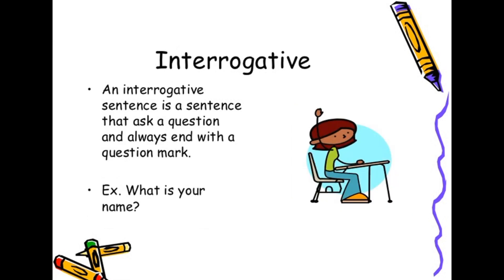Third is interrogative. An interrogative sentence is a sentence that asks a question and always ends with a question mark. For example, what is your name?